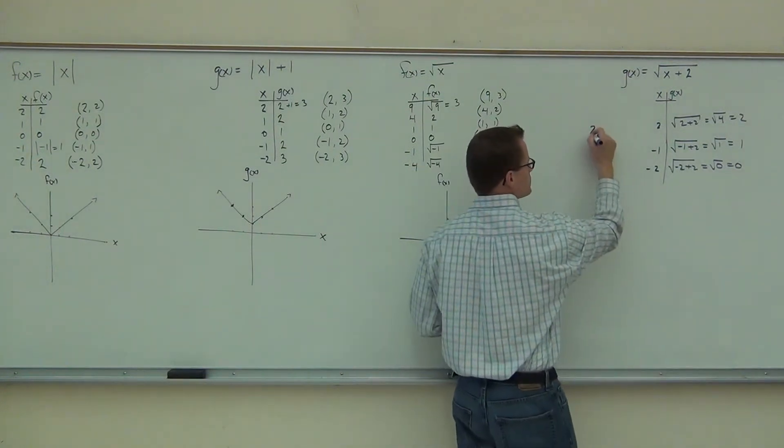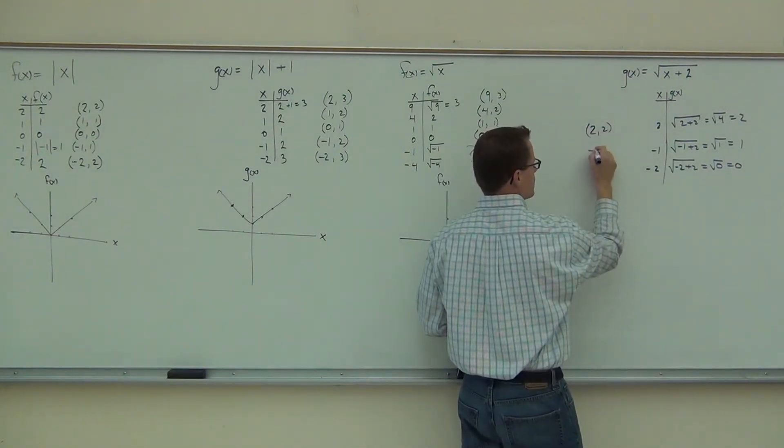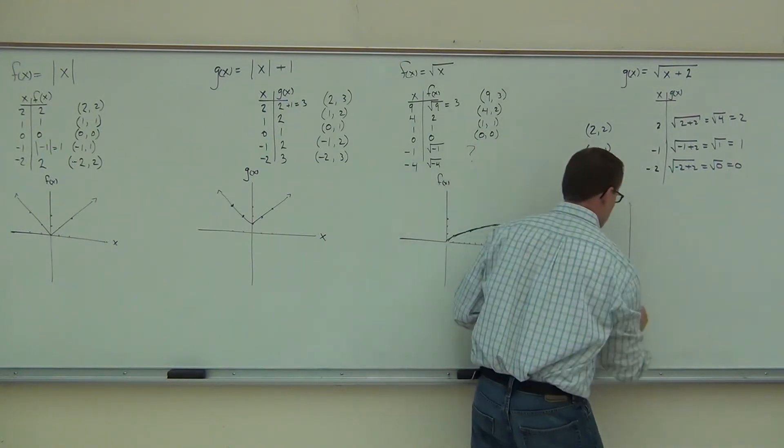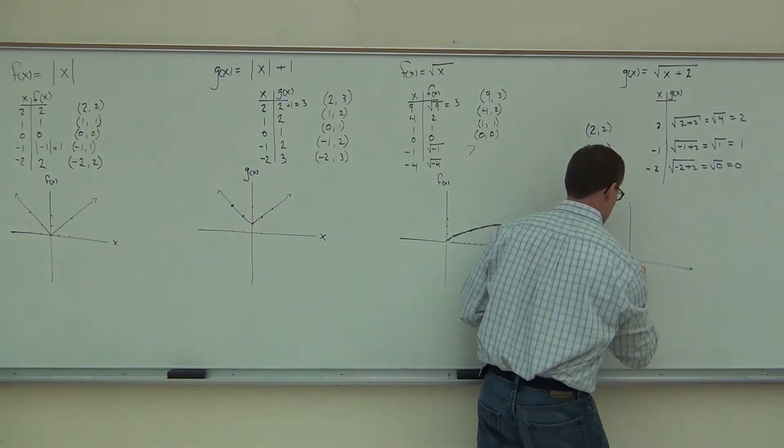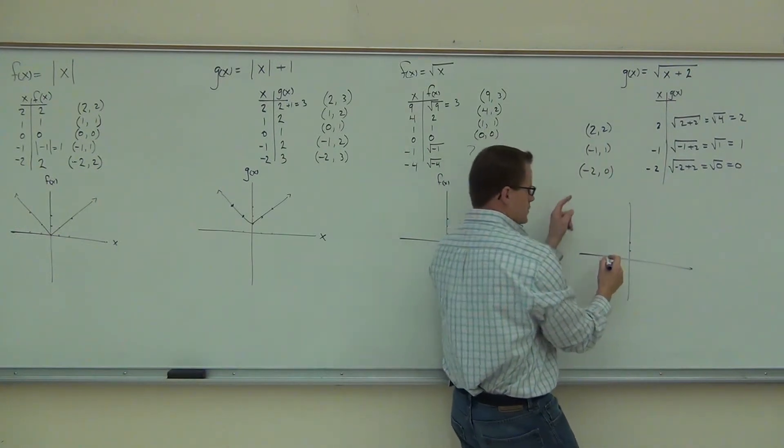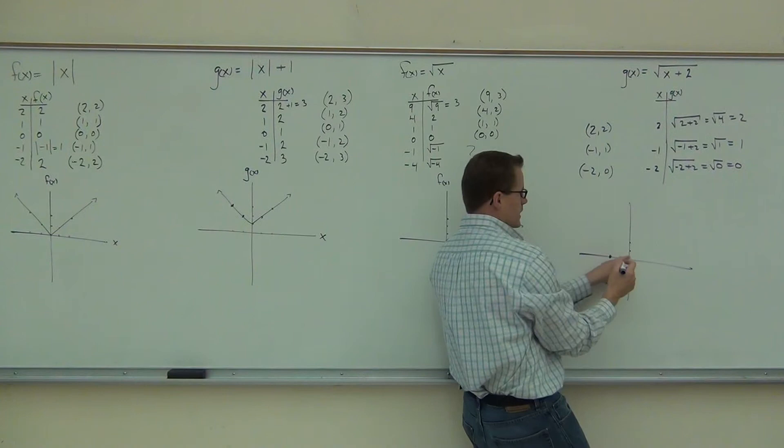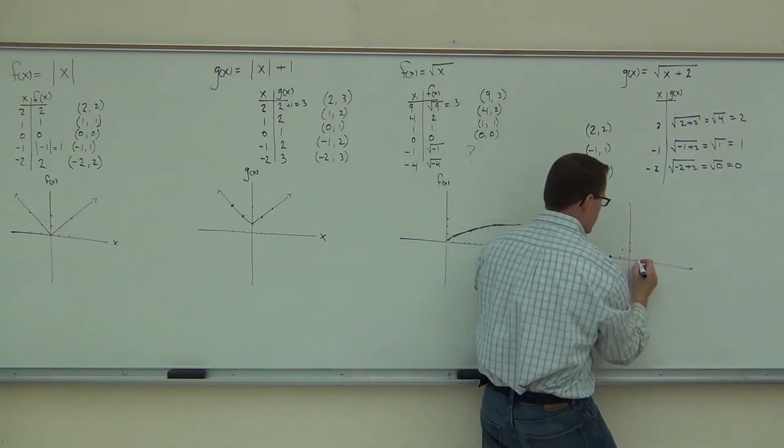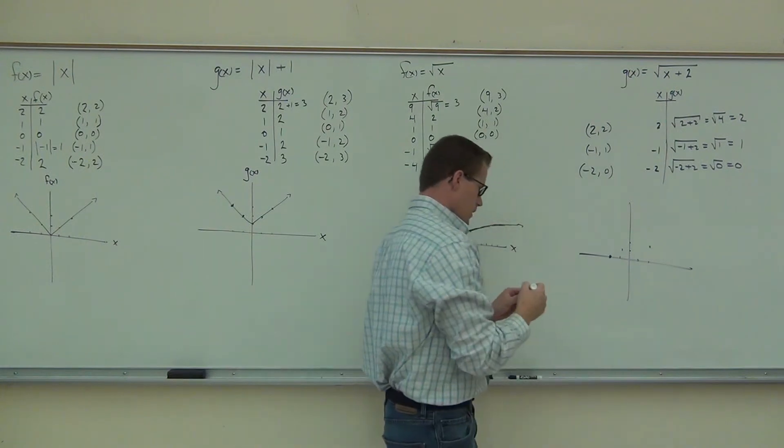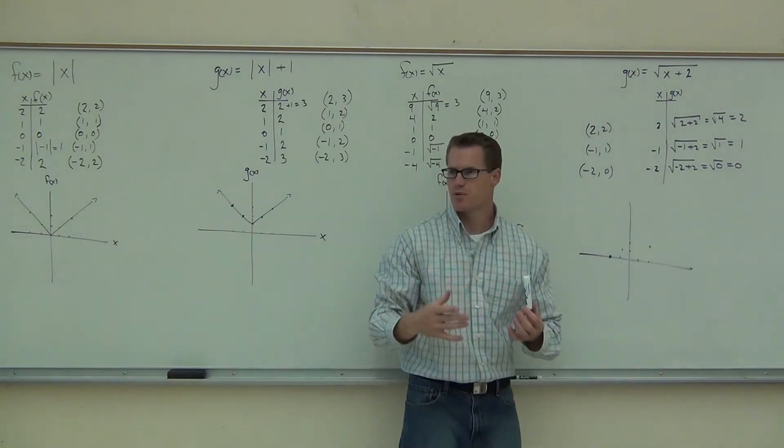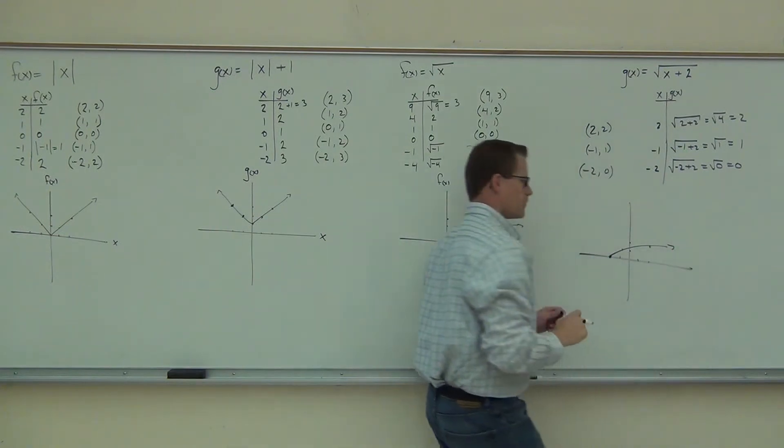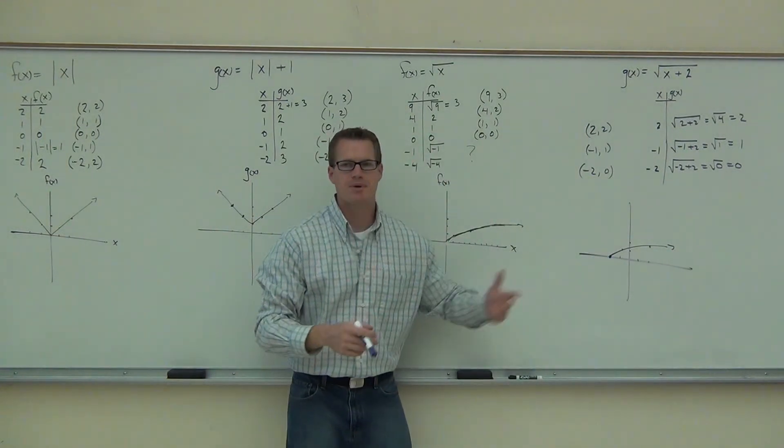If I plot these points, two, two, negative one, one, negative two, zero. Negative two, zero is here. Negative one, one is here. And then two, two is over here. Do you see that I get the same shape of graph? Same shape of graph, right? Same exact shape. What happened?